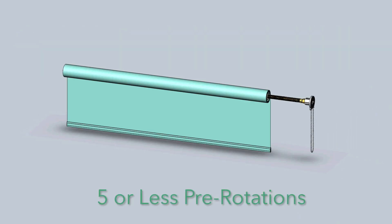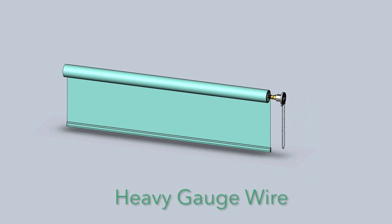Only 5 or less pre-rotations are needed for the majority of the shades because ZMC Spring Assist uses heavy gauge wire.